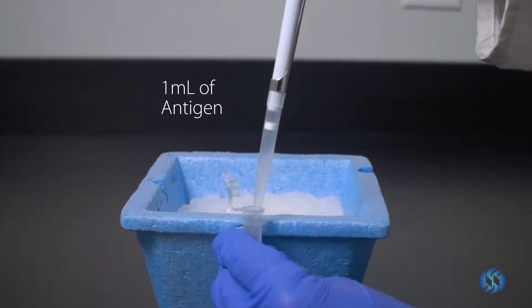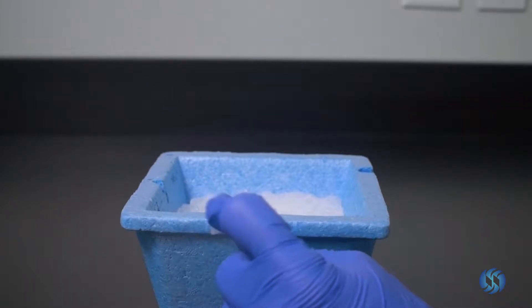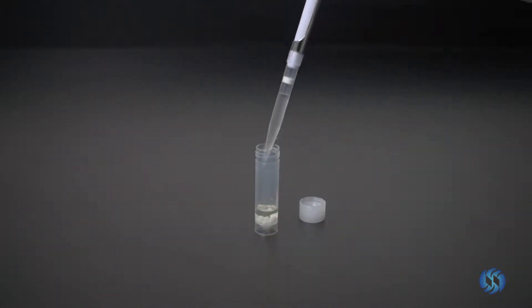Use a pipette to extract one milliliter of antigen. Inject the antigen into the 7-milliliter tube.